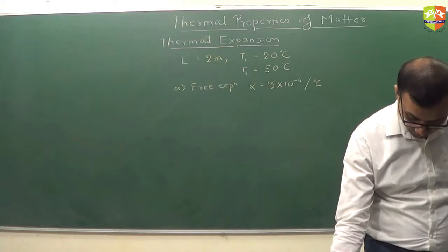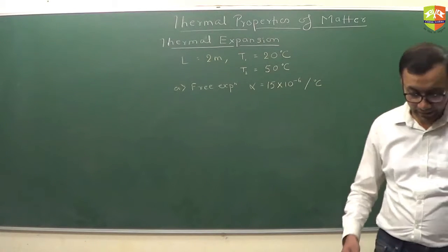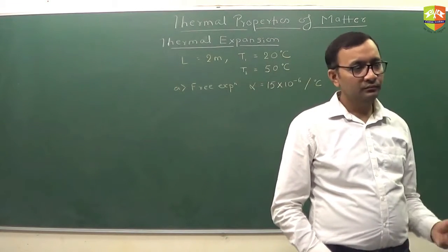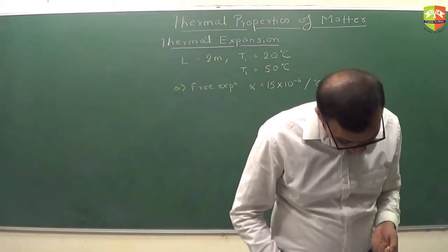You have to just find the expansion. How much did it expand? Delta L. 0.9 mm, 9 into 10 to the power minus 4. That's correct. So delta L is L alpha delta T.